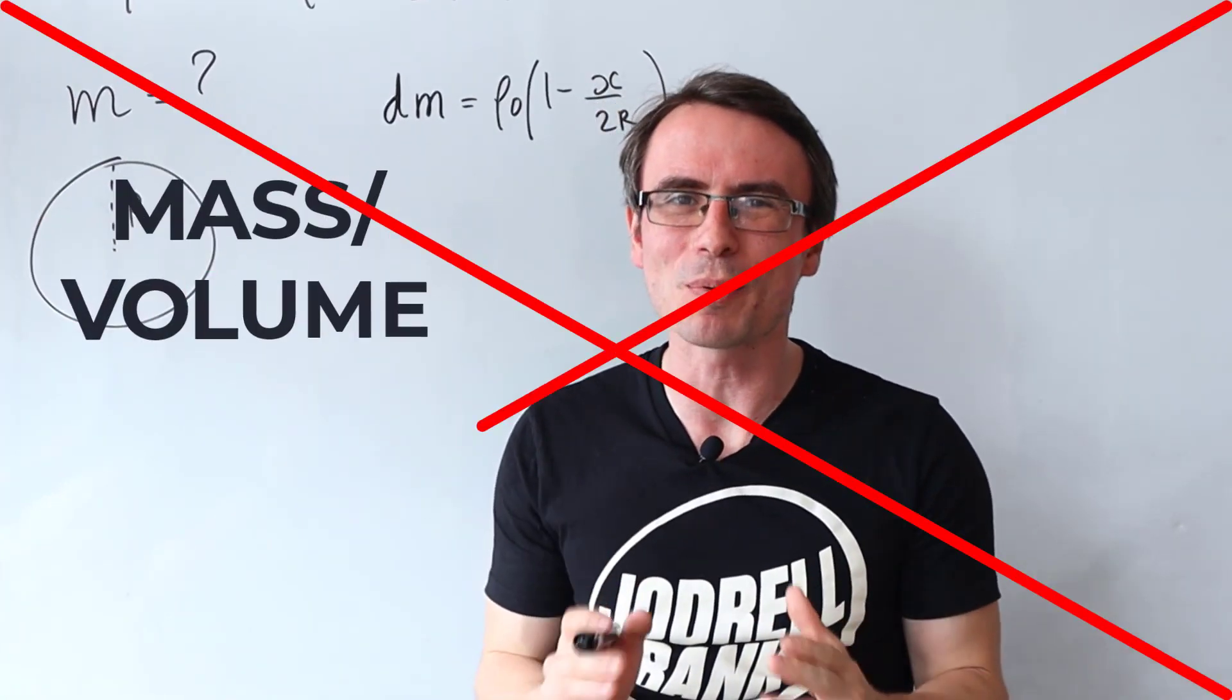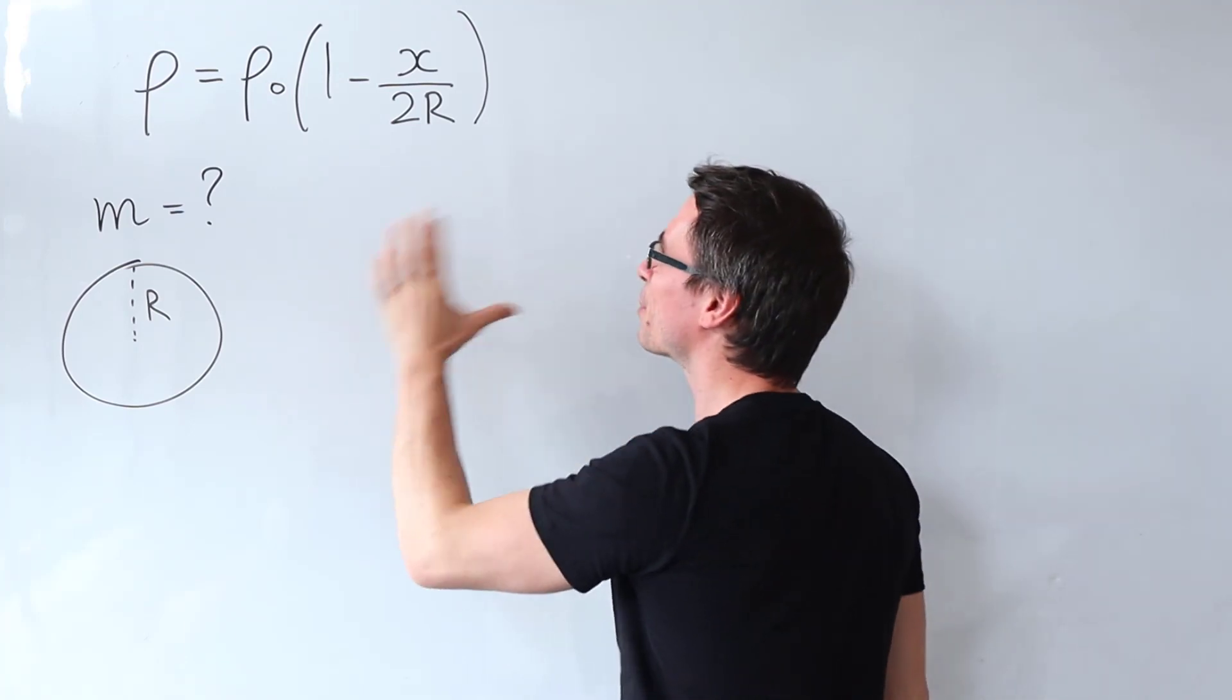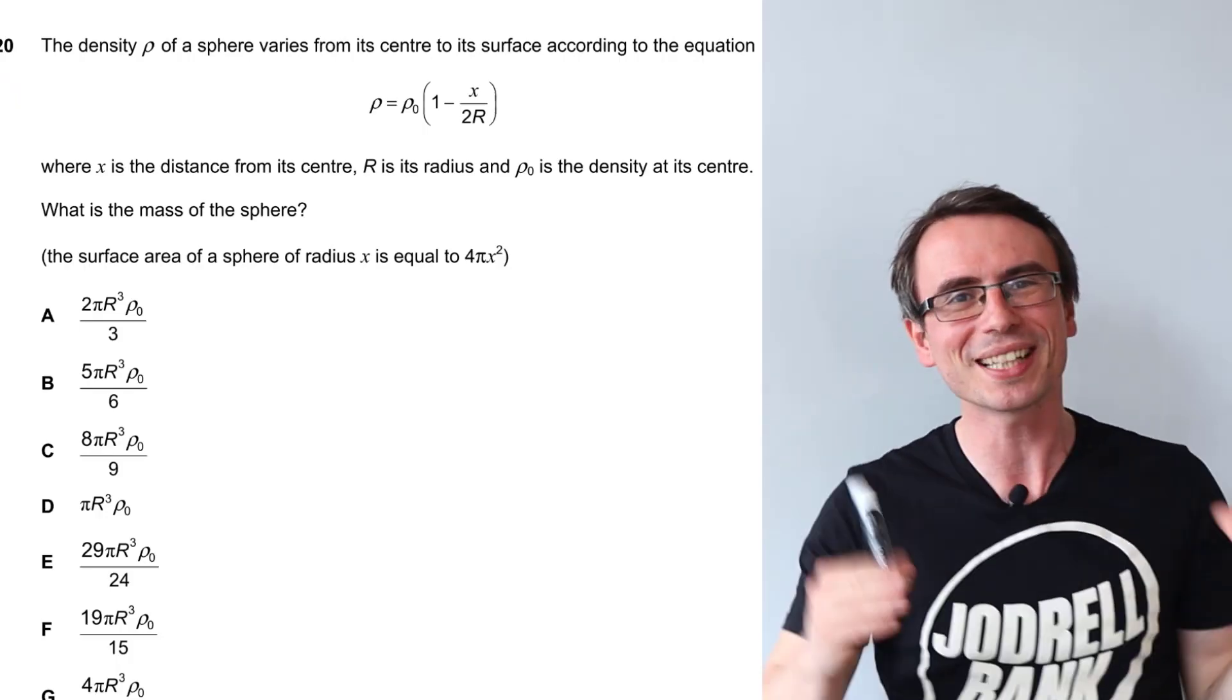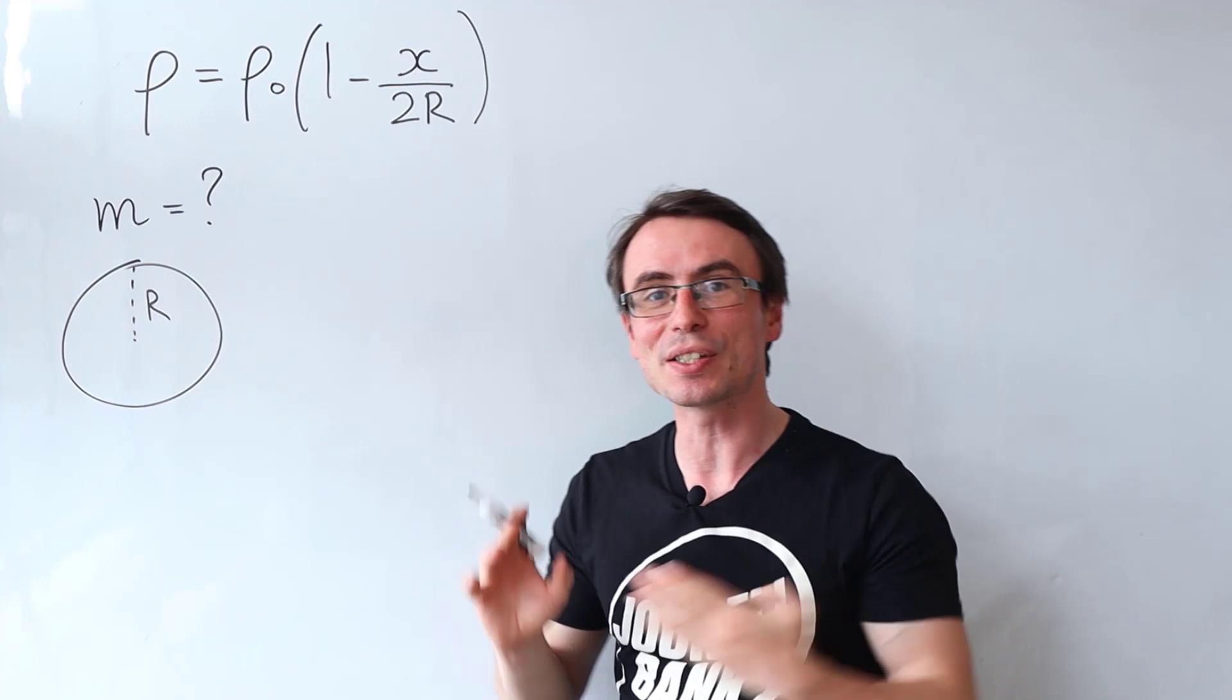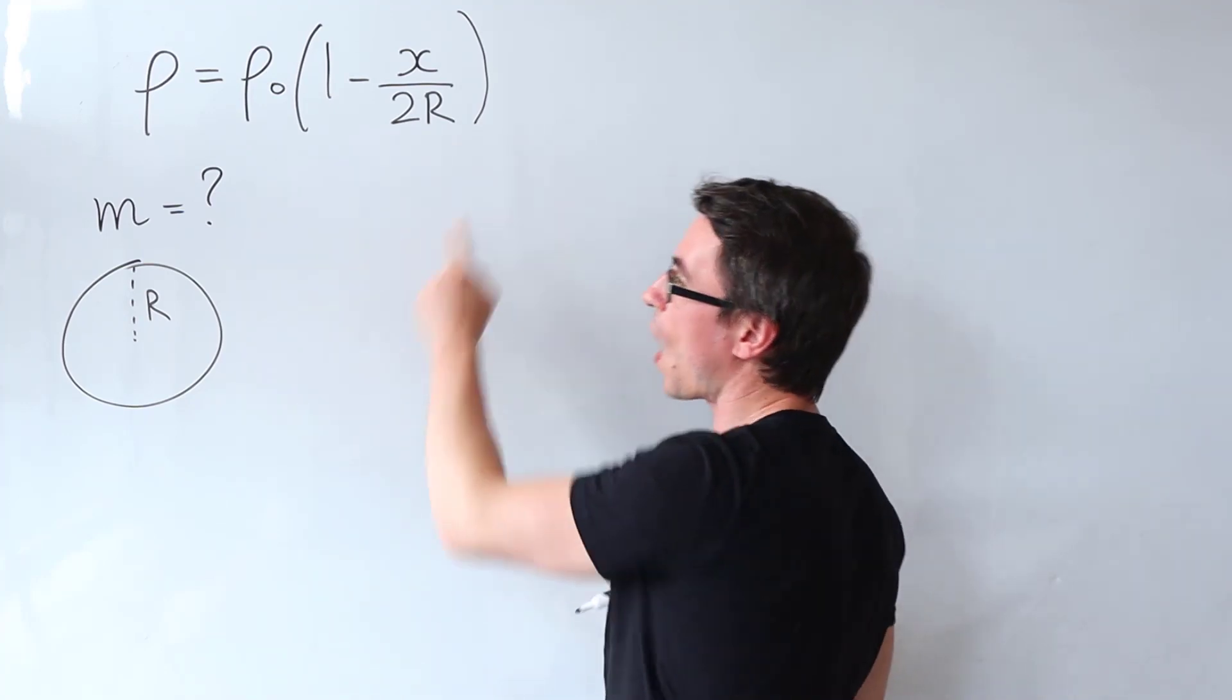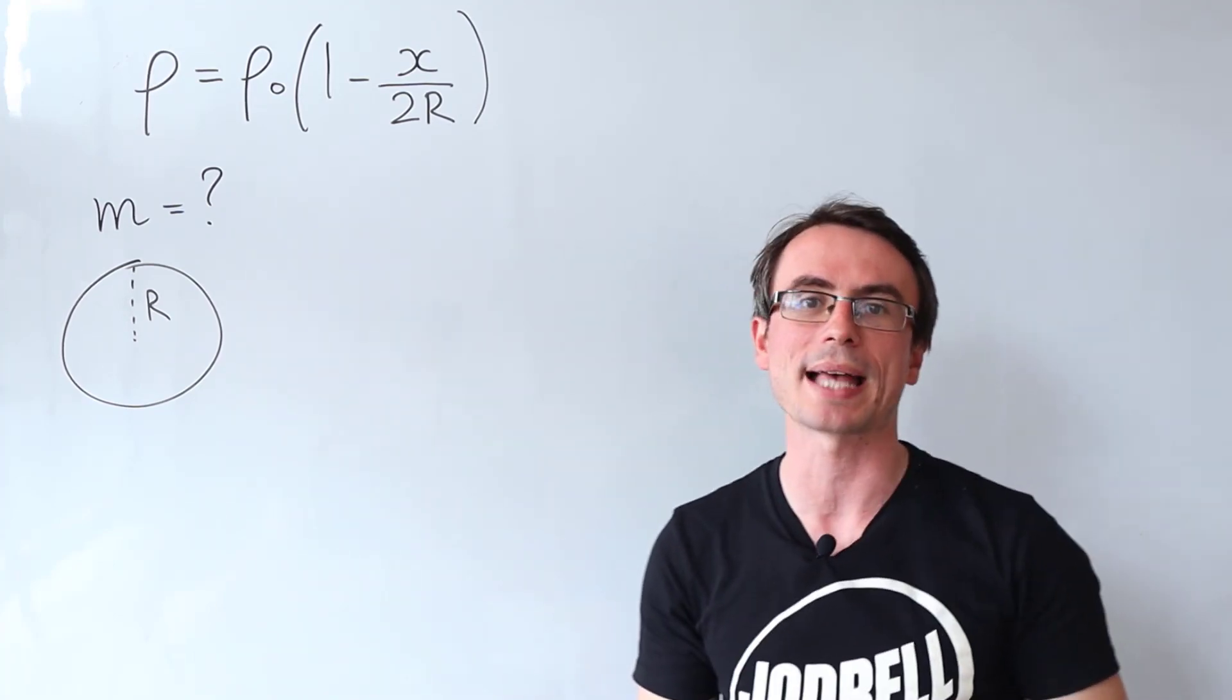When is density not equal to mass over volume? Let's answer this by looking at this Cambridge admission question. We're given that the density of a sphere ρ varies away from its center with the following expression, where x is the distance from the center and r is the radius of the sphere. We need to find the total mass.